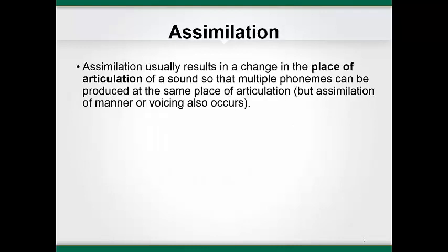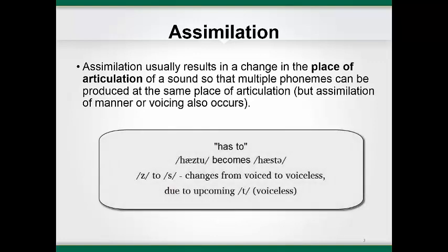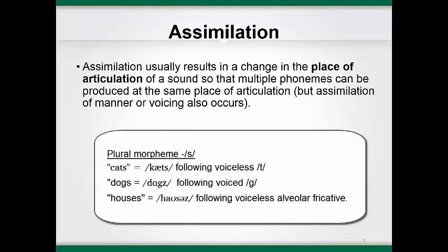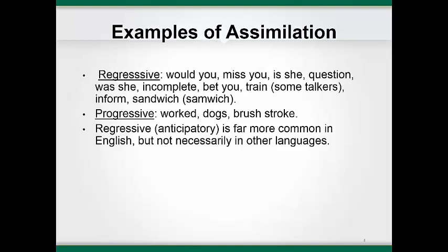While assimilatory changes in place of articulation are the most common type in English, assimilatory changes to the voicing or to the manner of articulation also occur. For example, if the z in "has" were pronounced as s in "has to," it would be an example of anticipatory voicing assimilation. In addition, the fact that the plural morpheme written as s in English is voiceless only in words ending with voiceless consonants other than s or sh, and is voiced in all other contexts, is an example of perseveratory voicing assimilation. For example, the plural morpheme is pronounced s in "cats" and z in "dogs." Furthermore, notice that the pronunciation of the morpheme changes to iz in words with alveolar or palatal fricatives, like in "houses." This slide shows some additional examples of regressive and progressive assimilation.